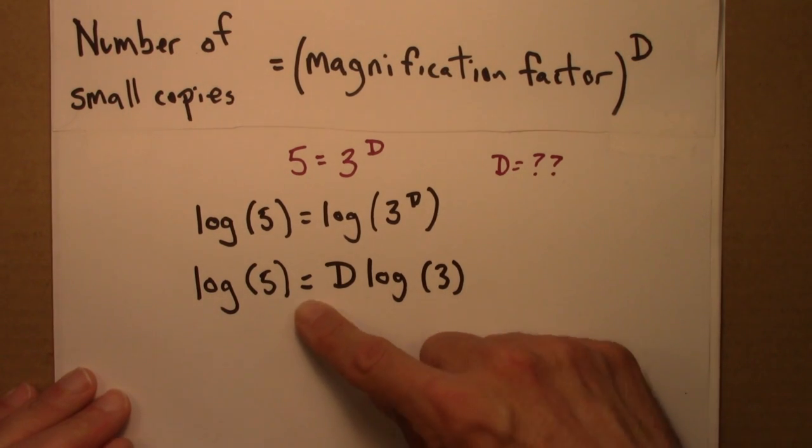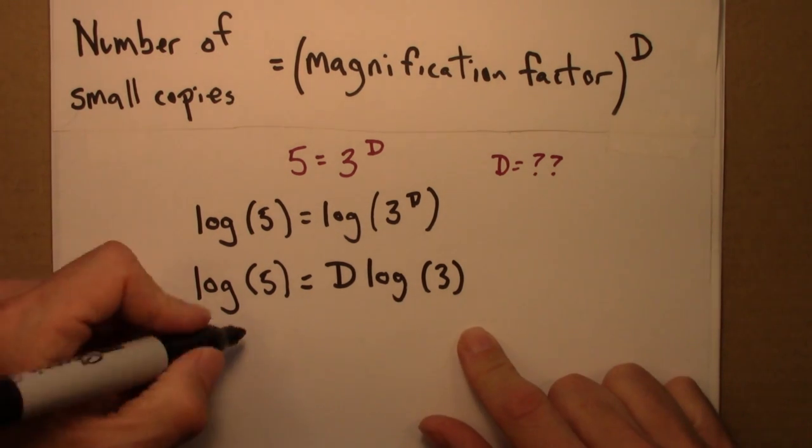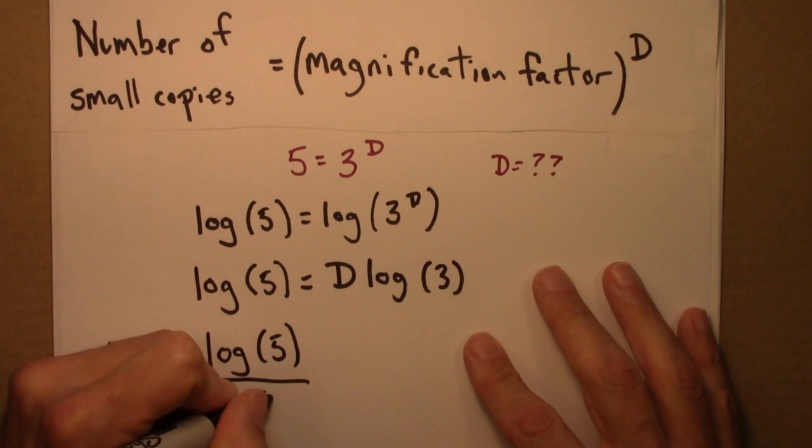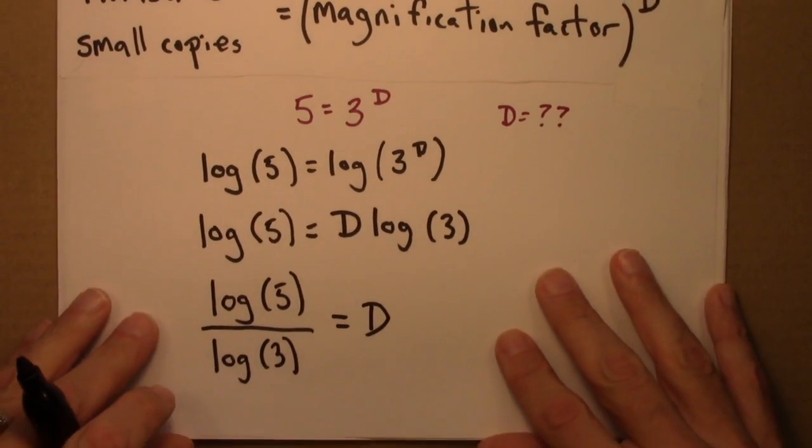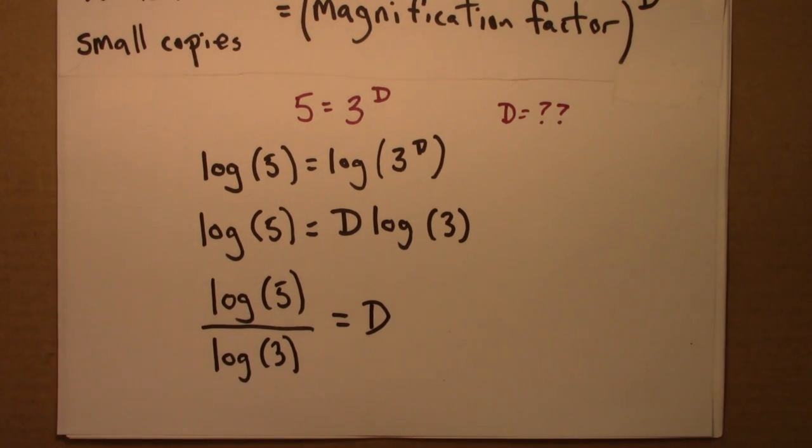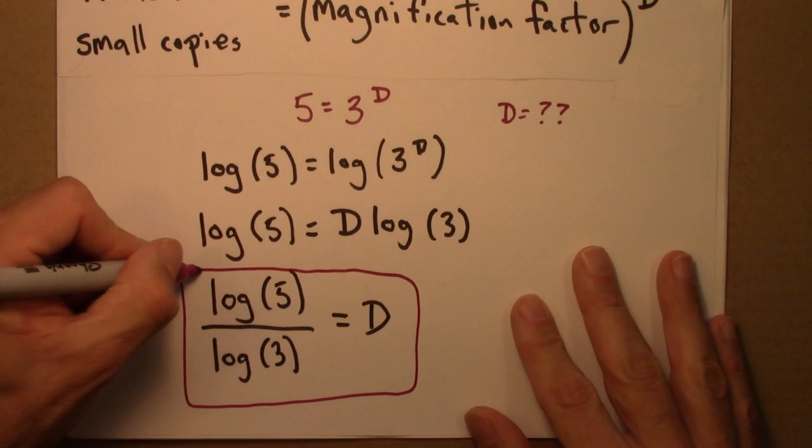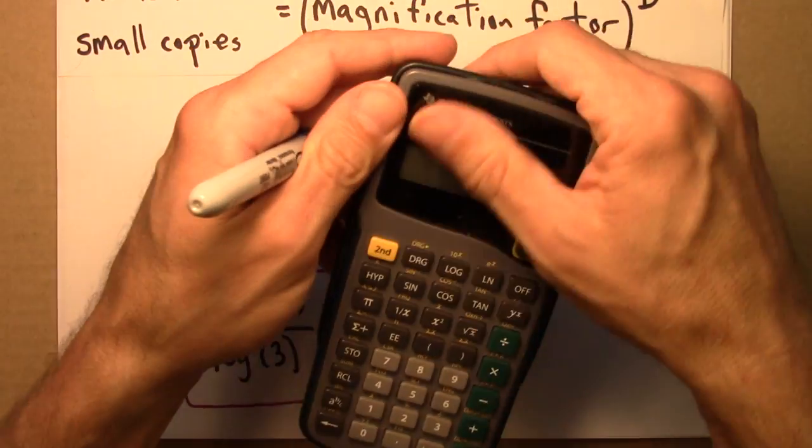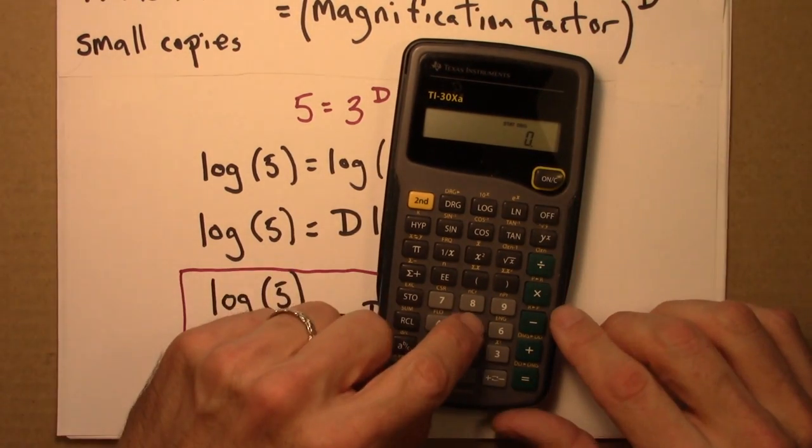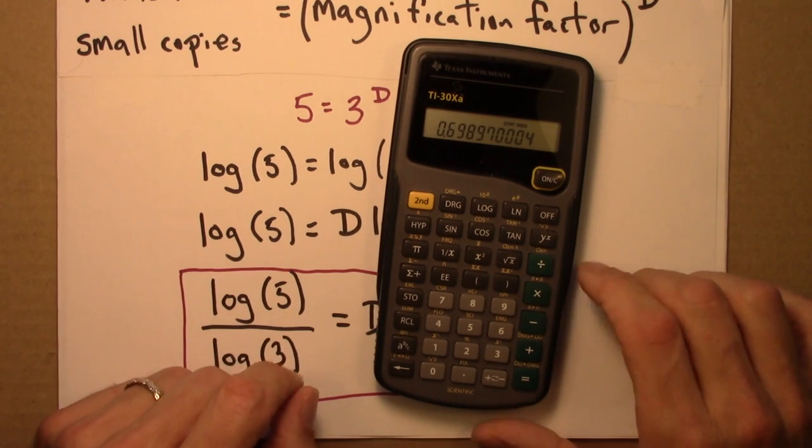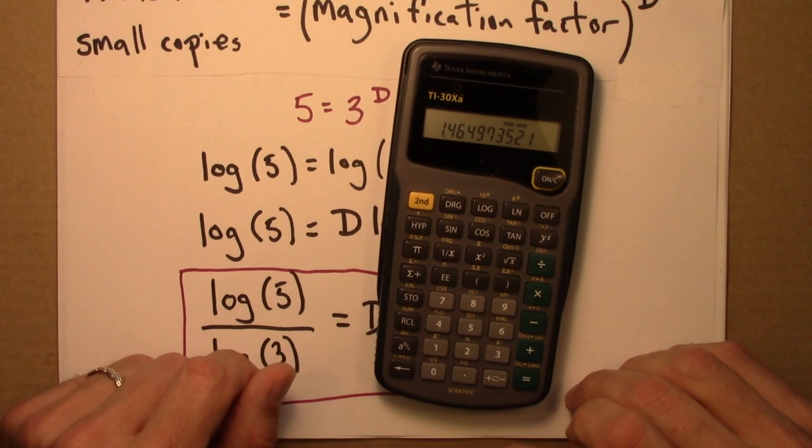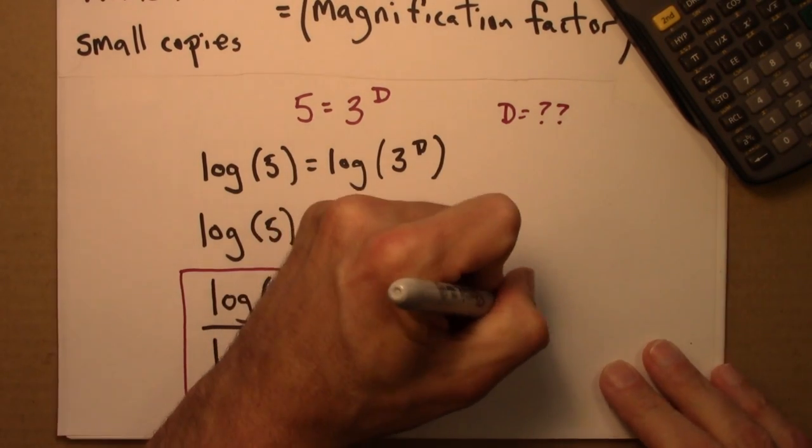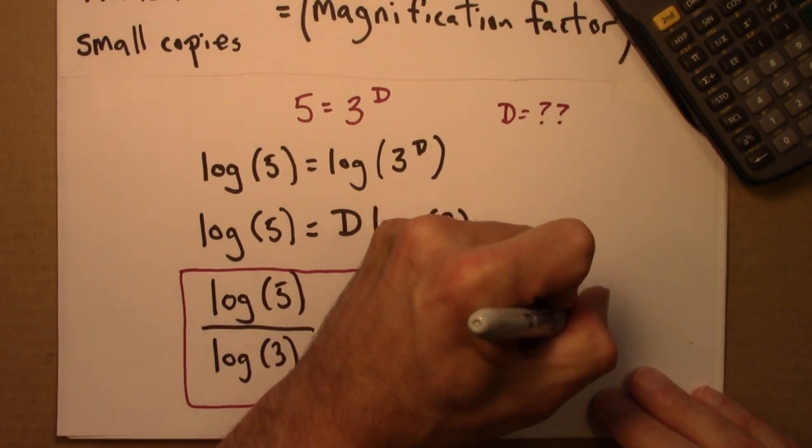The last step is to solve for d. I'll just divide both sides of the equation by log 3, and I'll end up with log 5 over log 3 equals d. That's my answer - that's an exact expression for the dimension d. We can get a number out of this with a calculator. I've got to do log 5 over log 3. Here's my trusty calculator. I'll do 5 logarithm divided by 3 logarithm, and I get approximately 1.465. So d is approximately 1.465.